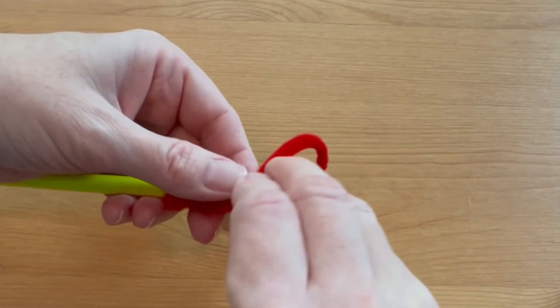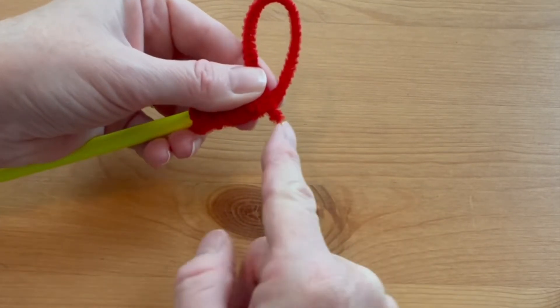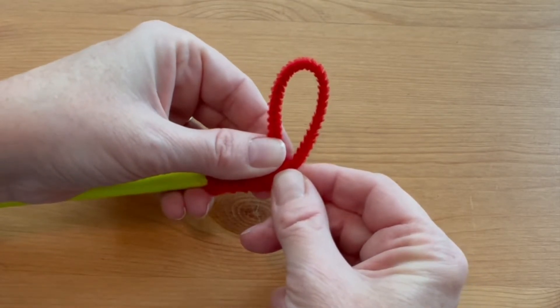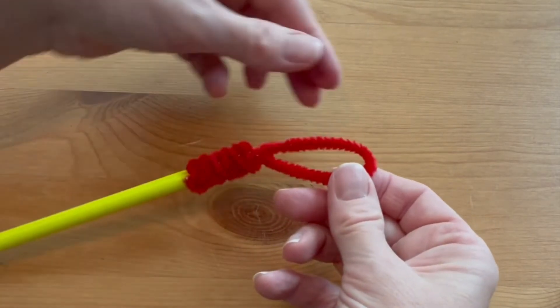Now form a loop with the tail, and with this little end, hook it around at the base of the eraser of the pencil just to hold it in place.